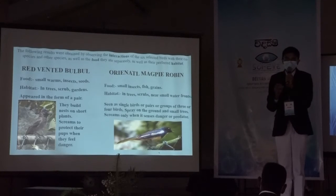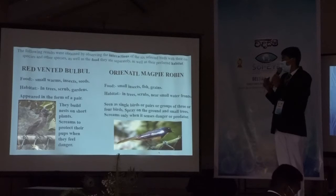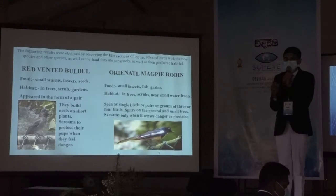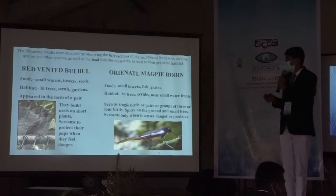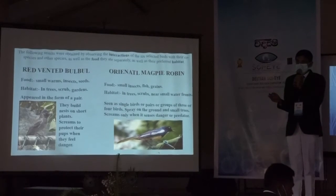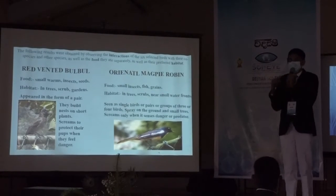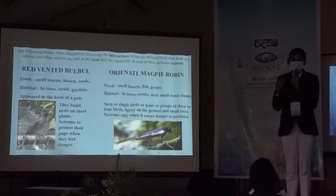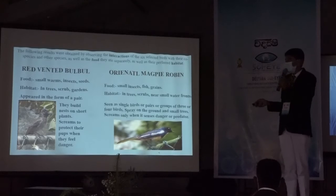These birds also like to eat small insects, fish, and grains. They can be seen in trees or on the ground, and also in jungle areas. These birds can be seen singly, in pairs, or in groups. They scream when they sense danger.